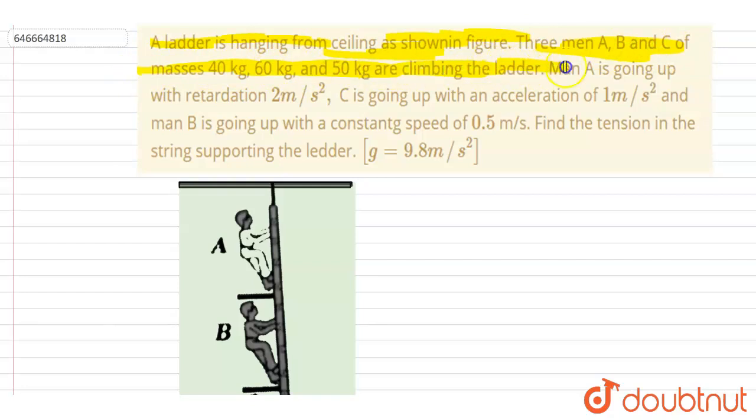Man A is going up with a retardation, that is, an acceleration in downward direction of 2 m/s². Man C is going up with an acceleration of 1 m/s².